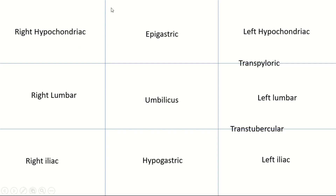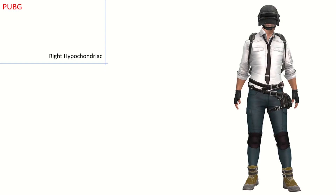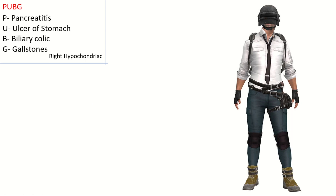The mnemonic for the causes of pain in the right hypochondriac region is PUBZ. I've also placed a picture of this PUBZ character here. P is for pancreatitis, U is for stomach ulcer, B is for biliary colic, and Z is for gallstones. If you look carefully, the character is also wearing kneecaps.